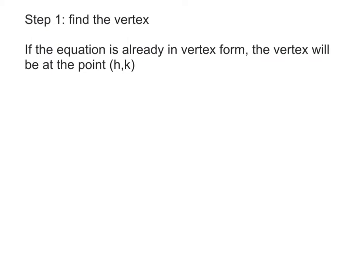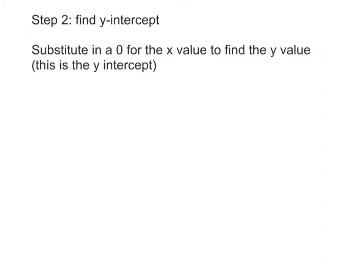Step 1: find the vertex. If the equation is already in vertex form, the vertex will be at the point (h, k). Step 2: find the y-intercept. To find the y-intercept, we're simply going to substitute in a 0 for the x value into the equation to find the y value. This is the y-intercept.